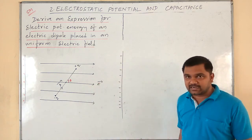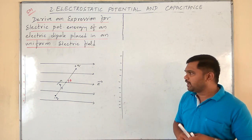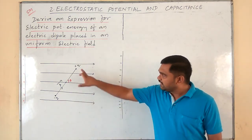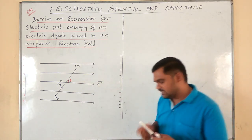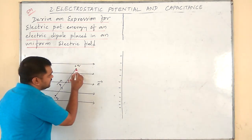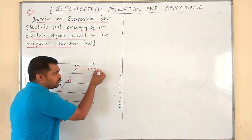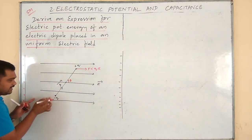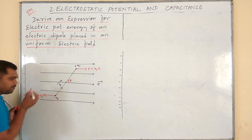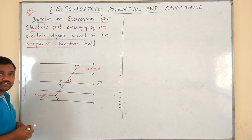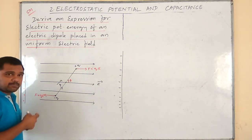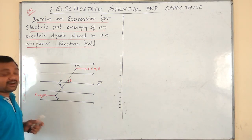Under such conditions, the dipole experiences two forces. Since it has a positive charge, it will be attracted towards the negative plate with force F = qE, and the negative charge is attracted towards the positive plate with the same force F = qE but in the opposite direction. These two equal and opposite forces acting simultaneously on the same system constitute a couple, due to which the electric dipole experiences a torque.